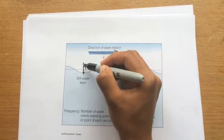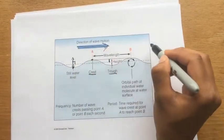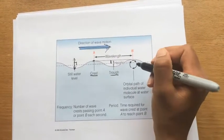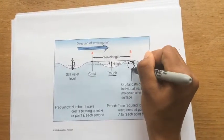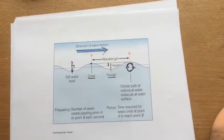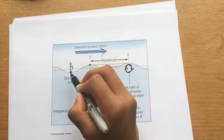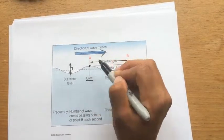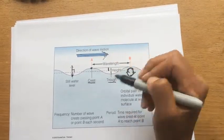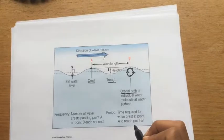The particle is moving up and down while the wave moves horizontally. But in reality, ocean waves move in an orbital path — they move in a circle. So in reality, a particle at point A wouldn't just be moving up and down, it would be moving in an orbital path.